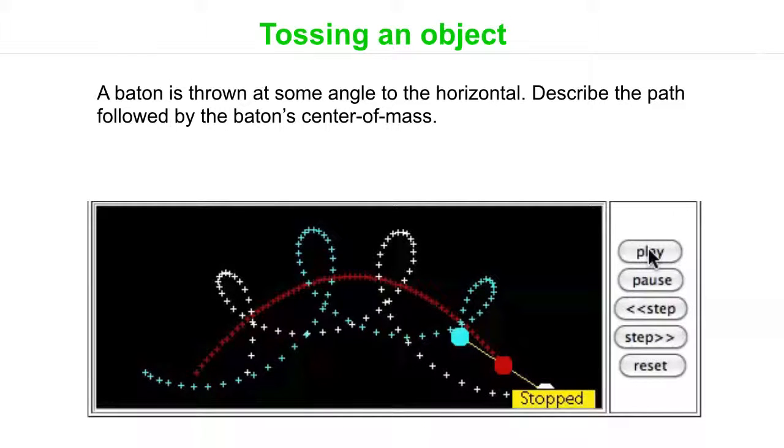And you'll see the center of mass, which is marked by the red point, follows a nice simple parabolic trajectory. Okay, so we know how to analyze that. We understand that from projectile motion, whereas we get much more complicated